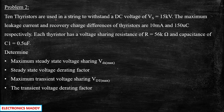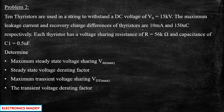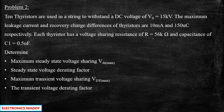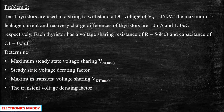They have mentioned: 10 thyristors are used in a string to withstand a DC voltage Vs equal to 15 kV. They've given N equal to 10. The maximum leakage current and recovery charge differences of the thyristor — delta Id is given as 10 milliamperes and delta Q is given as 150 micro coulomb respectively. Each thyristor has a voltage sharing resistor R and capacitor C given. They're asking us to find: maximum steady state voltage sharing Vds max, steady state voltage sharing derating factor, maximum transient voltage sharing VdT max, and the transient voltage derating factor.